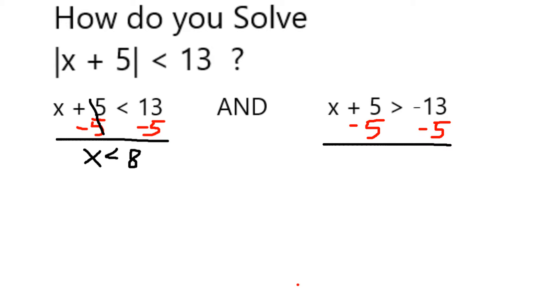For the second inequality, I can again subtract 5 from each side, and this time I get that x has to be greater than negative 13 minus 5, which is going to be negative 18.